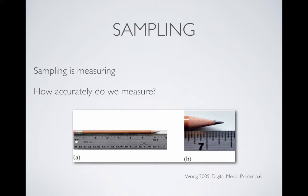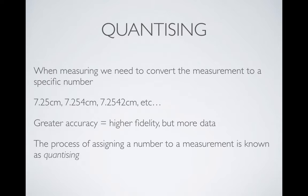If you think about measuring a pencil with a ruler, you can measure it to various degrees of precision. You could say it's seven centimeters, or seven and a quarter, or zoom in and say seven point two five four two centimeters. You could continue adding more decimals after the decimal point to get higher and higher accuracy. Obviously the greater the accuracy, the higher the fidelity of your samples — but the more data is required.